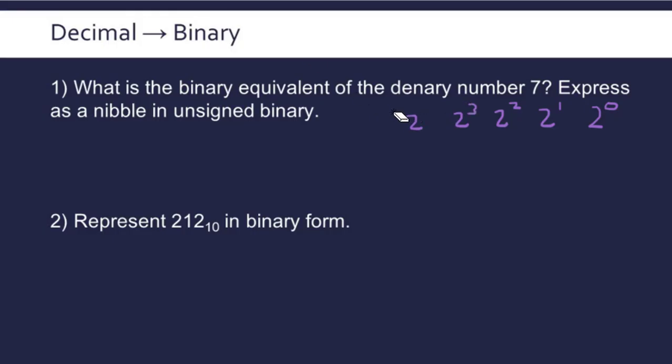We only need to do 4 because we have a nibble here. We're doing a nibble so we need 4 bits. And then we can convert this to the actual columns, so 2 to the power 0 is 1, 2 to the power 1 is 2, 2 to the power 2 is 4 and 2 to the power 3 is 8. You can see the column heading is double each time and we can draw a little table here.